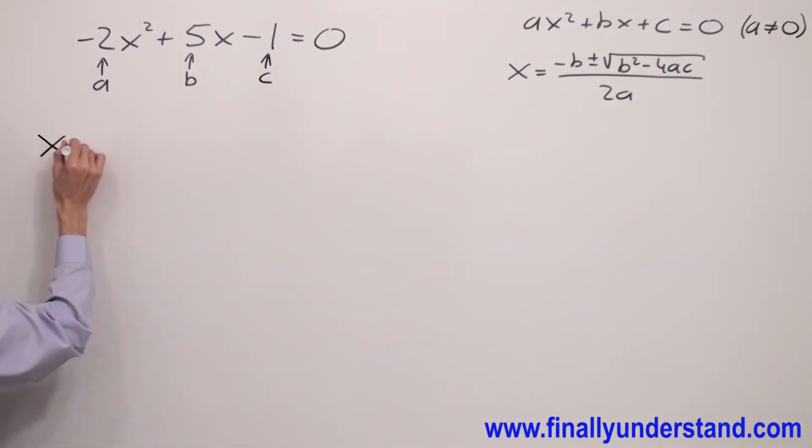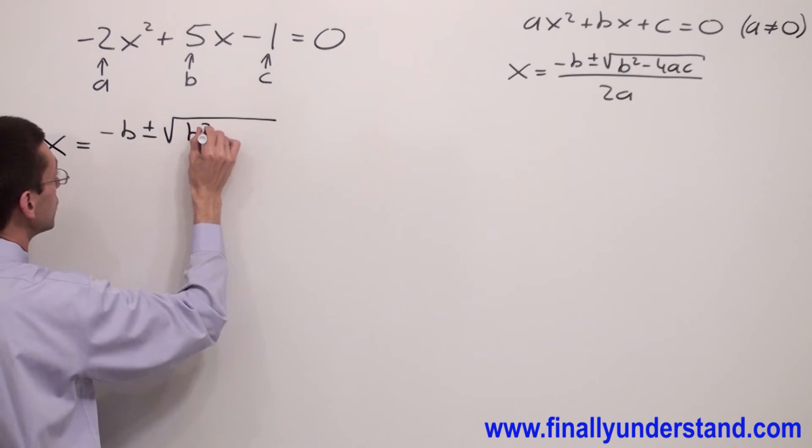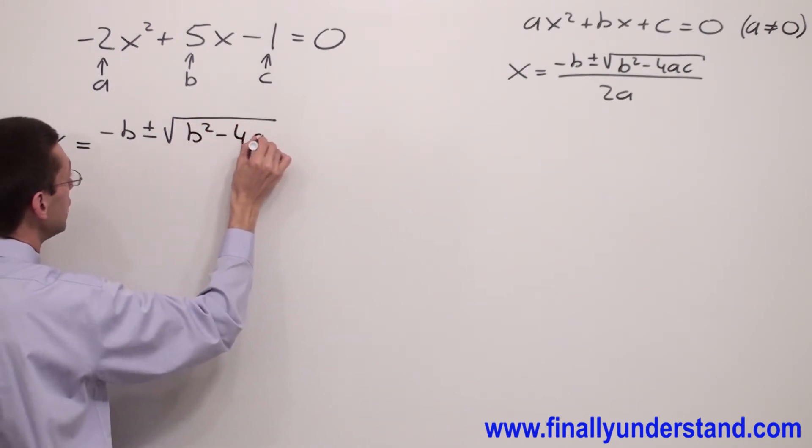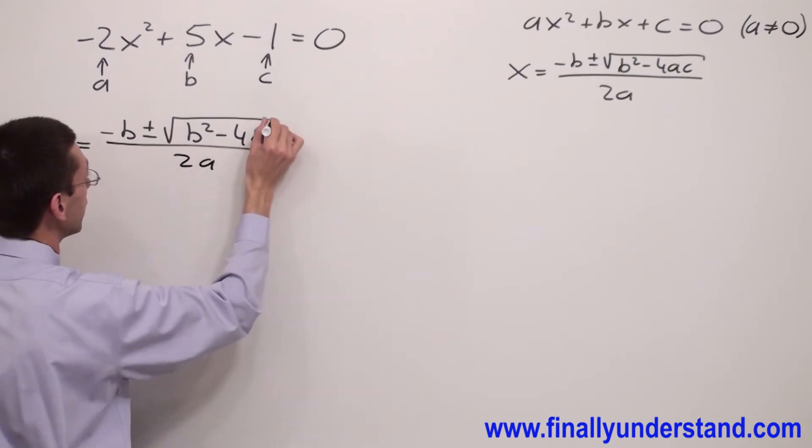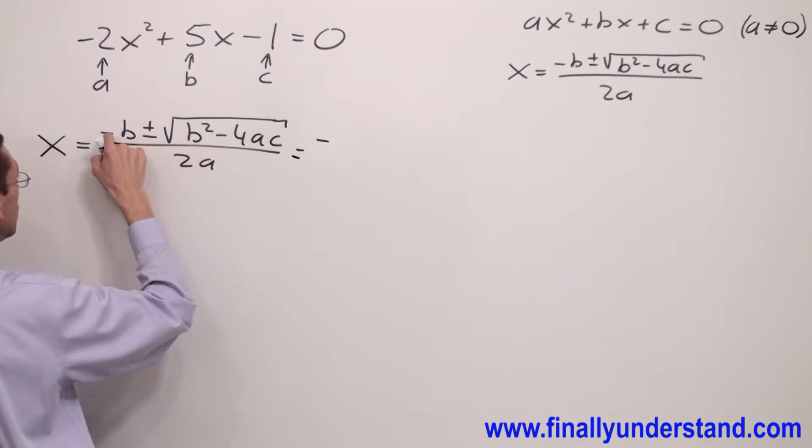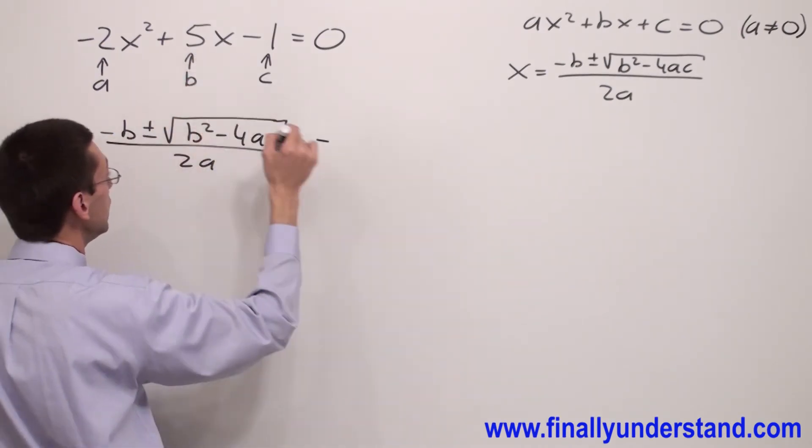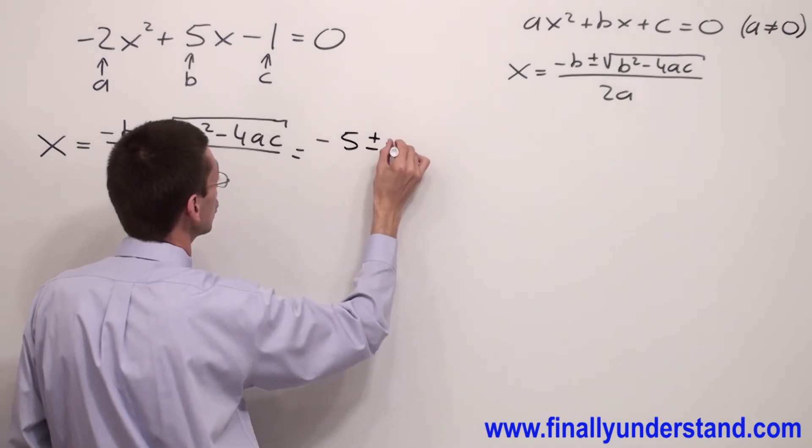X equals minus b plus minus square root b squared minus 4ac over 2a. And this is equal to... negative, this negative comes from the formula, and my b is positive 5. I have plus minus square root...